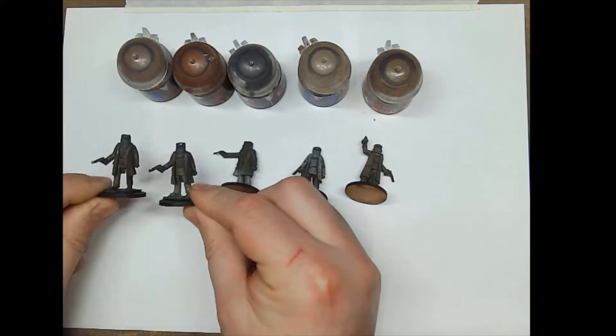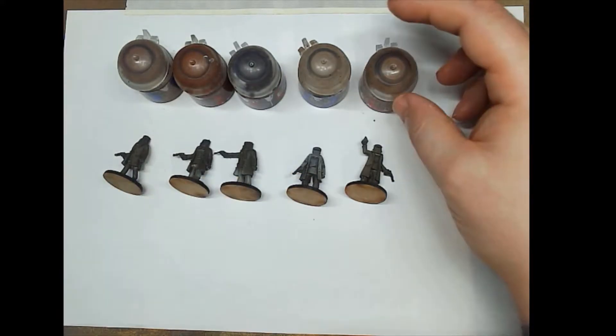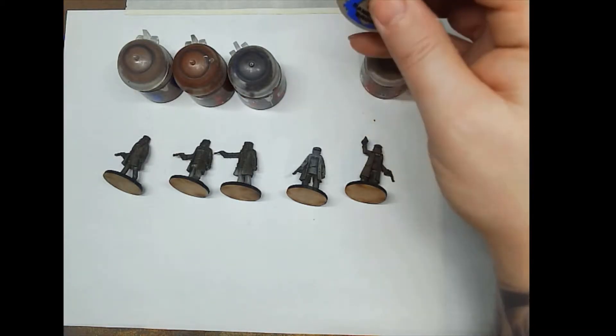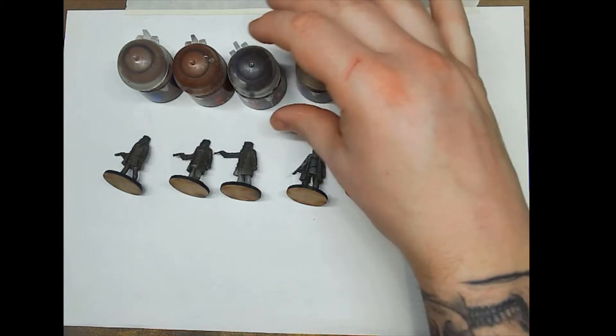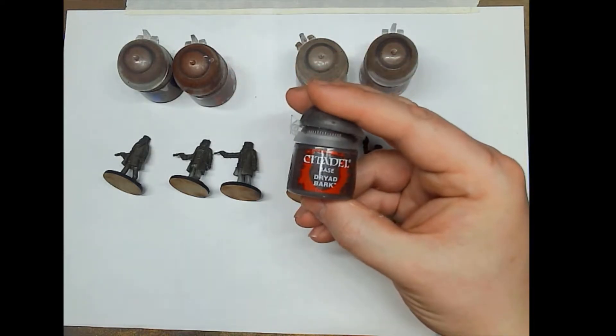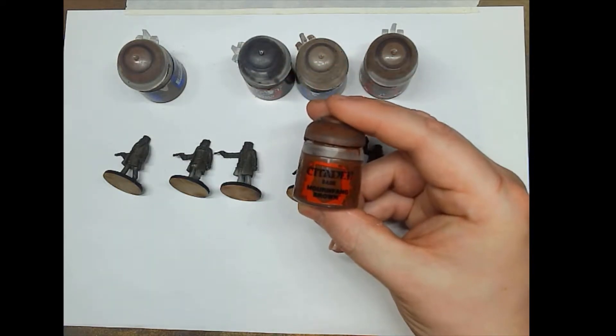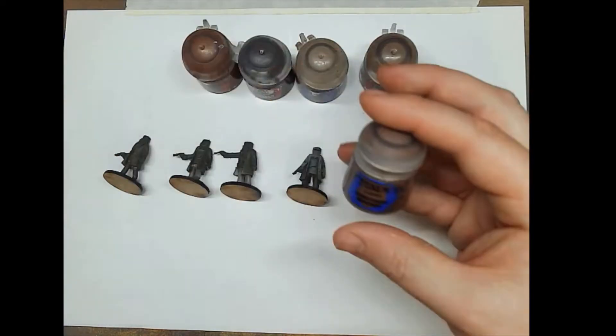These models have been primed with a brownie black primer, and we're going to be using these five paints. So we've got Steel Legion Drab, Baneblade Brown, Dryad Bark, Mournfang Brown, and Gorthor Brown.